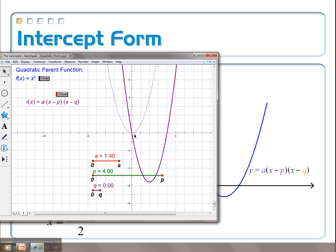Right now, my q's at zero. That's the other x-intercept. Let me make my q, maybe something over here, maybe something like negative 2. And then, again, you can see that whatever those values are, that's where the x-intercepts are. That's why it's called intercept form.